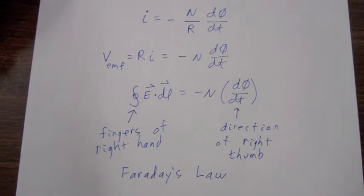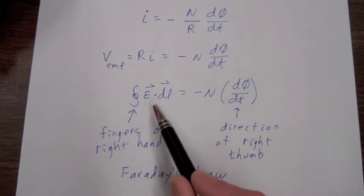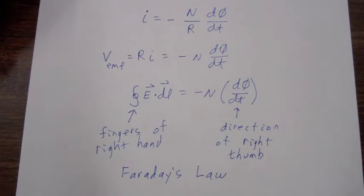So Kirchhoff's voltage law that tells us that the sum of the voltages around a closed path is zero is only correct in the DC case.